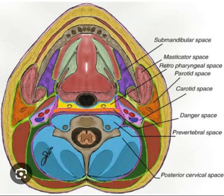Parapharyngeal space. An inverted pyramid extending from the skull base down to the hyoid. Prestyloid compartment contains the internal maxillary artery, maxillary nerve, deep lobe of the parotid, and adipose tissue.